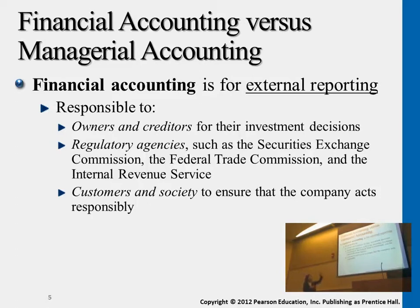So these are the parties — also taxing authorities and regulators; they need to know whether the business is paying taxes. Others like customers and society also need to know how the company is doing. So what we learn in financial accounting is putting together summary information in statements: income statement, retained earnings, balance sheet, and cash flows. These are statements for outside users, for people not working in the business.